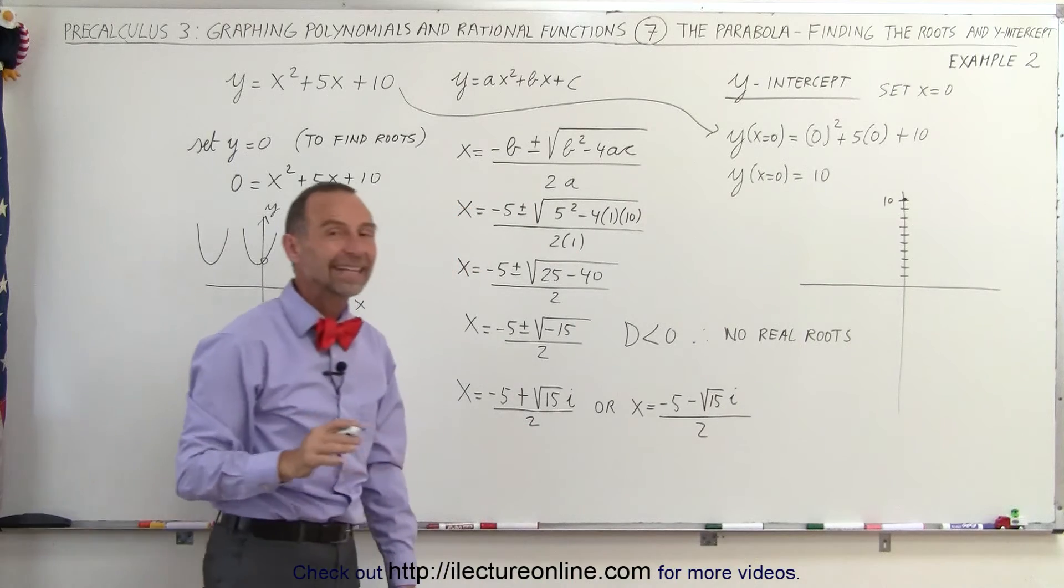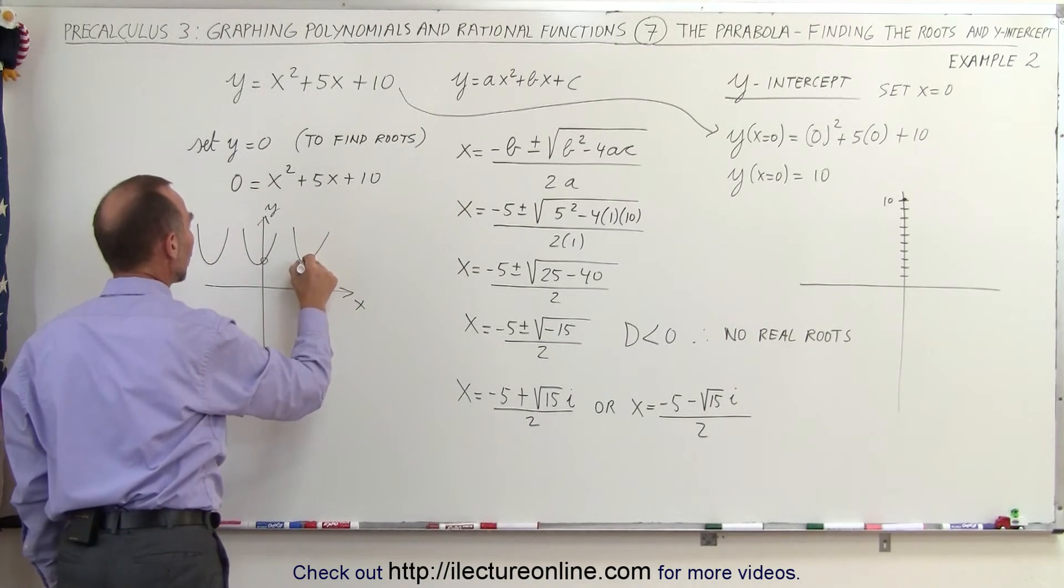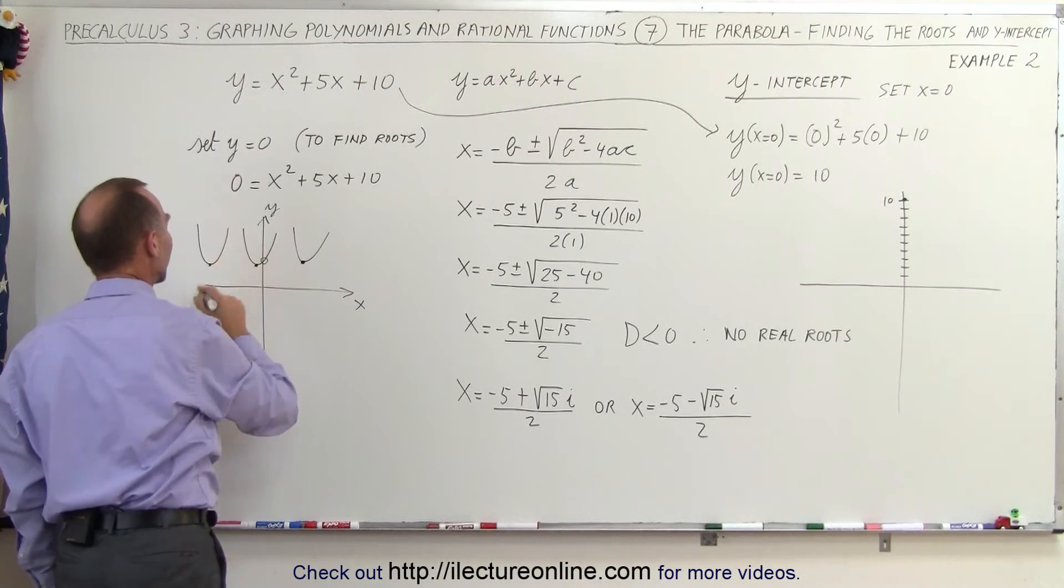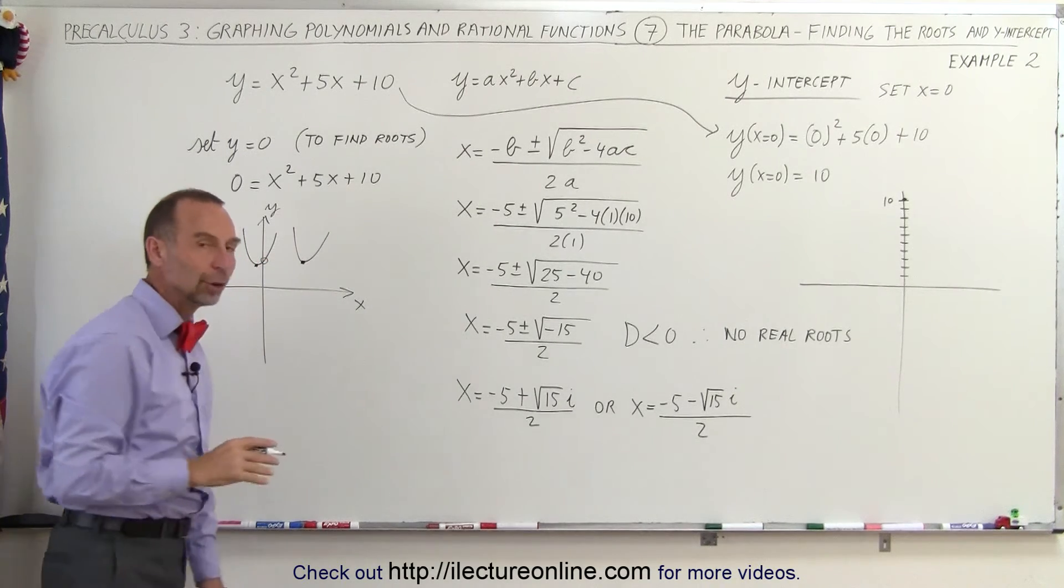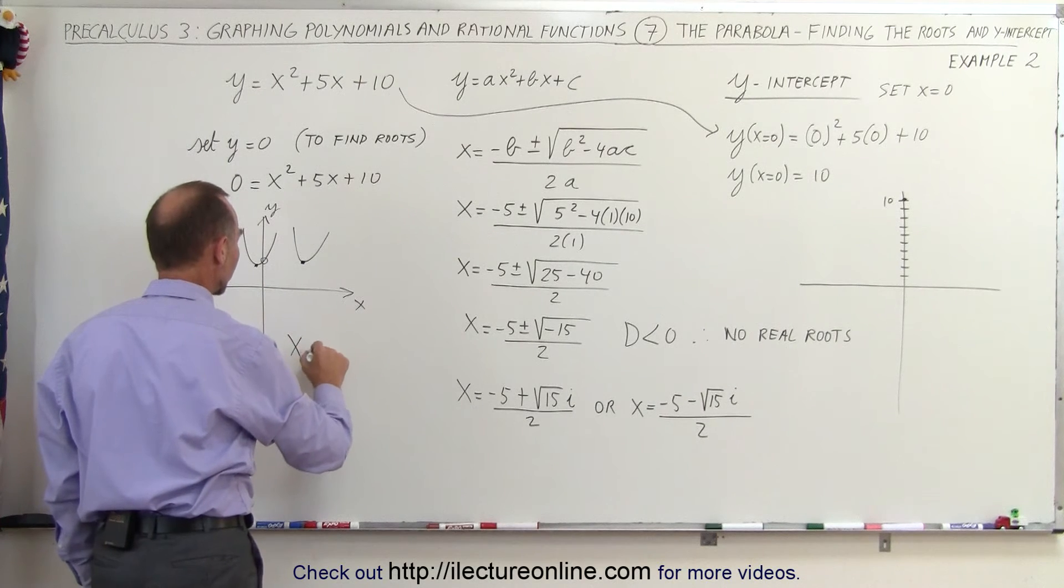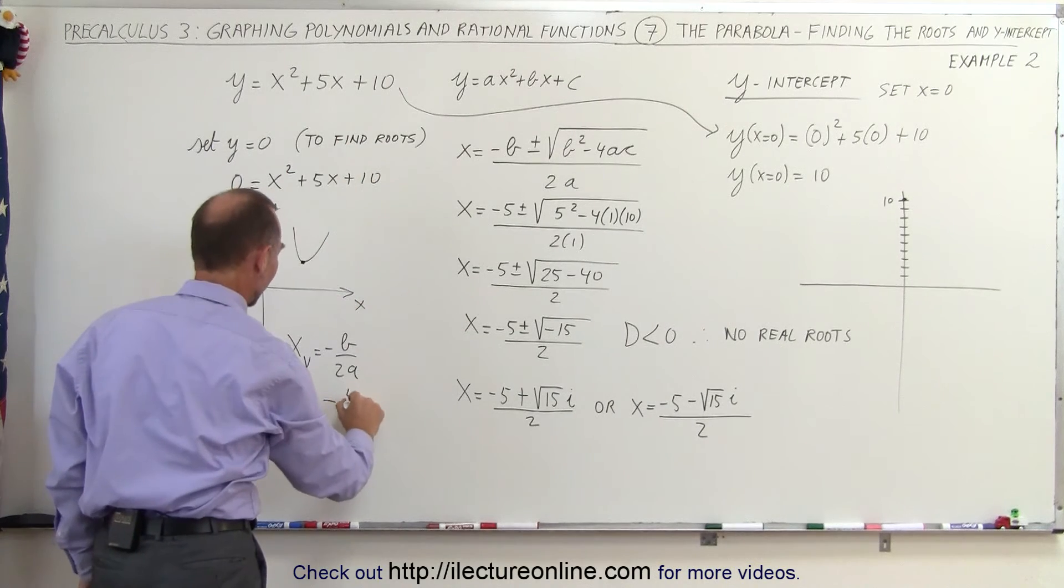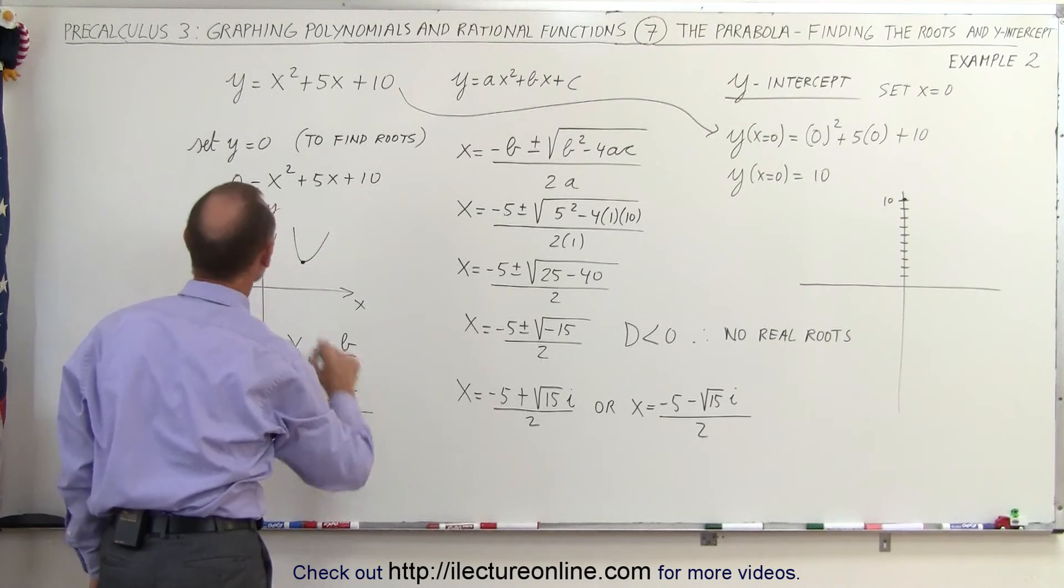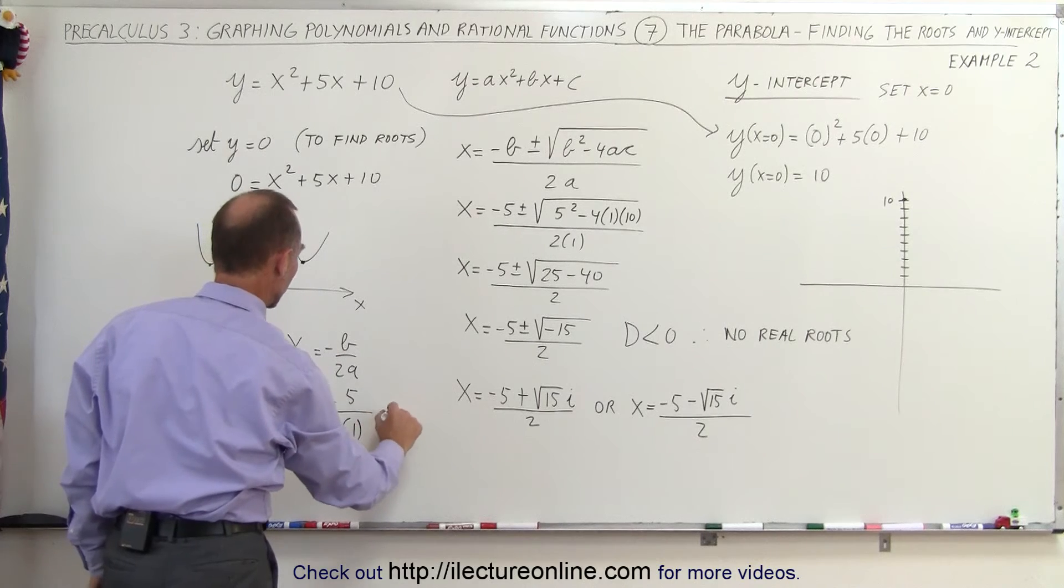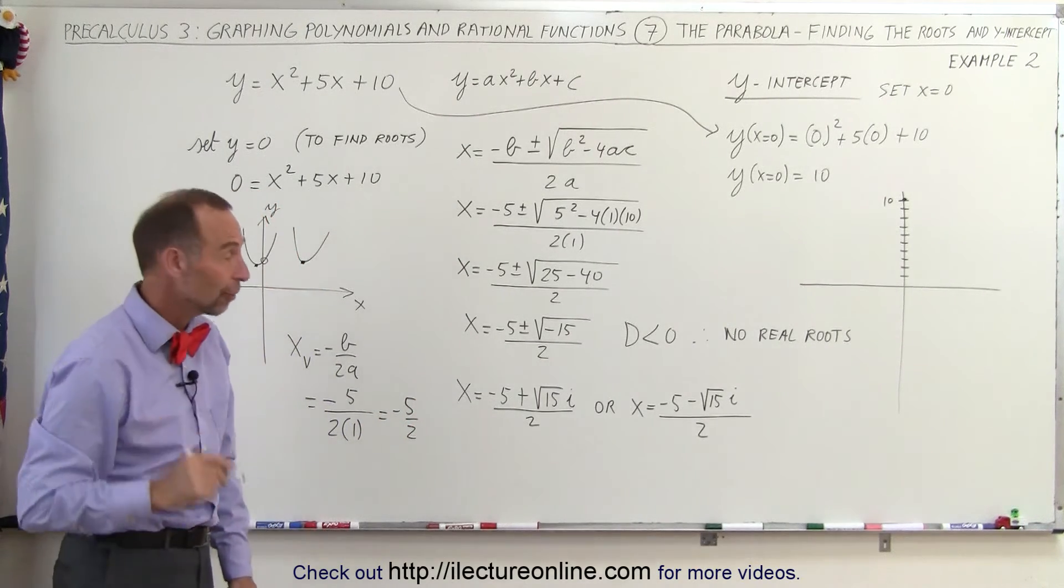To help us find that, let's find the x-coordinate of the vertex. We know that the lowest point on the graph, the minimum value of the graph, has an x and y value. That is the vertex of the parabola, and the x-coordinate of the vertex is equal to minus b divided by 2a. So that's equal to minus 5 divided by 2 times 1, which is minus 5 divided by 2, minus 2 and a half.